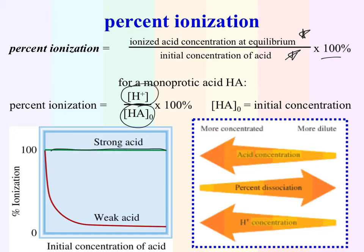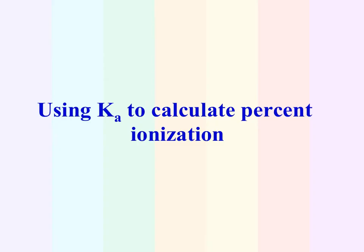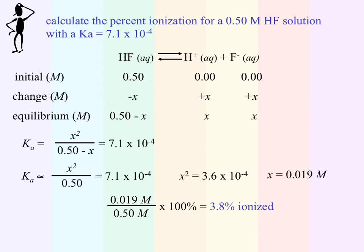For strong acids, they have 100% ionization — that's straightforward. For weak acids, the concentration of H plus produced at equilibrium dictates how much the acid has ionized. So let's look at utilizing Ka to calculate percent ionization. They've told us to calculate the percent ionization for a 0.50 molar HF solution with a Ka equal to 7.1 times 10 to the negative 4.